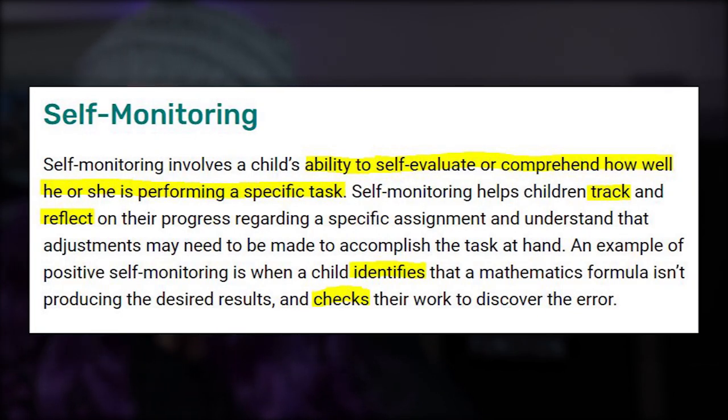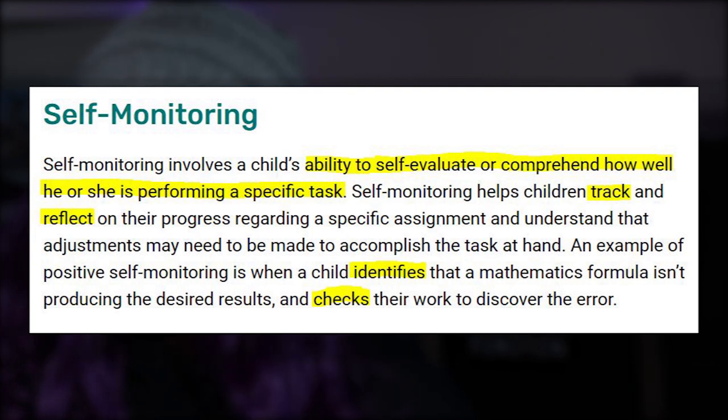Having trouble with monitoring is an issue that most people will point to in children not getting their homework done. Math is probably one of the best examples of using monitoring abilities, because usually your teacher would say: here are the steps, show your work, and then check your work. Self-monitoring involves a child's ability to self-evaluate or comprehend how well he or she is performing a specific task. It helps children track and reflect on their progress and understand that adjustments may need to be made. An example is when a child identifies that a mathematics formula isn't producing the desired results and checks their work to discover the error.